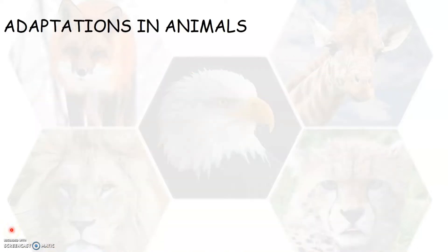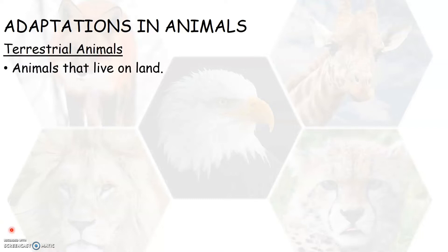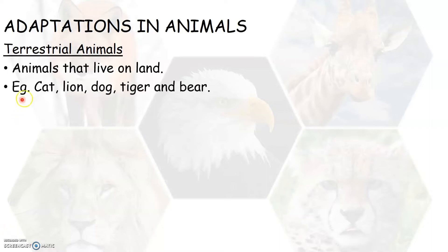We are familiar with many animals that live on land. These animals that live on land are called terrestrial animals. Some of the terrestrial animals are, as we know, cat, lion, dog, tiger, bear, etc.